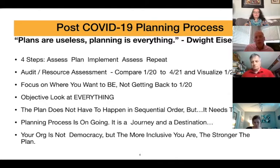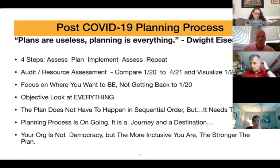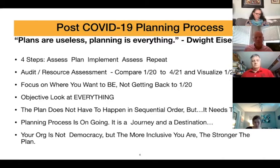There's a four-step process: assess, plan, implement, assess, and then repeat. Assessing is super important because you need to always know where you are, what you need, and how you're going to get it. To get started, you need to do a deep audit and a deep resource assessment. You can compare wherever you want to draw the line—let's say January of 2020—and look at where you are now versus a date in the future when you feel you may be coming out of this.